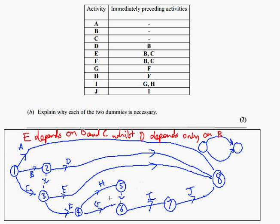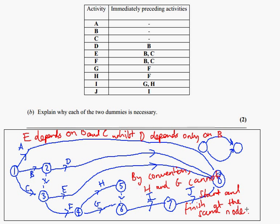How about the second one? Remember it was a convention that we can't have H and G starting and finishing at the same node. So I'm just going to say that, by convention, H and G cannot start and finish at the same node. So we need to introduce a new node for G to go to. And this is a very reasonable way to express that fact. So that's one mark each for those two sentences. Or you can say it in your own words. But make sure you get across the general idea there. Okay, so that concludes question three.